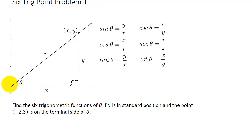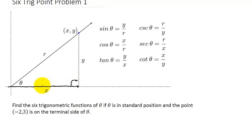This is an angle in standard position. Standard position means the vertex is at (0, 0) and the initial side lies along the positive x-axis. We then rotate the terminal side and it stops at our point. So sine theta equals y over r.